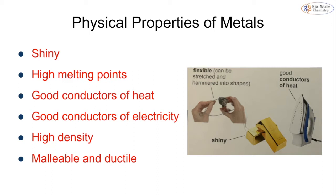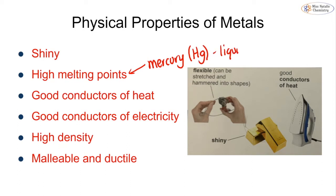The vast majority of metals share these general properties, though some may vary slightly. They tend to be shiny — gold and silver, for example, have a nice shine when polished. They typically have high melting points. The one exception is mercury, symbol Hg, which is a liquid at room temperature. It is one of only two liquid elements on the periodic table, the other being bromine, and it is the only metal that is liquid at room temperature. All other metals have very high melting points, upwards of 1000 degrees Celsius.